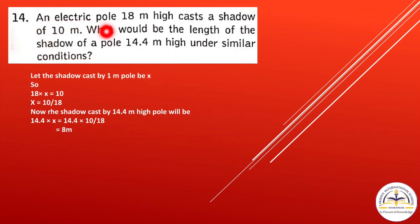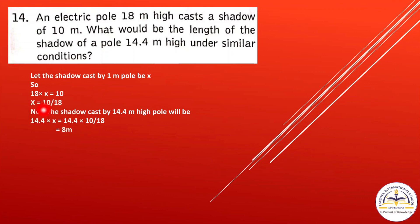Question 14: An electric pole 18 meters high casts a shadow of 10 meters. What would be the length of the shadow of a pole 14.4 meters high under similar conditions? So 18 times x equals 10, giving x equals 10 divided by 18. Then 14.4 multiplied by x — putting in the value — gives 8 meters.